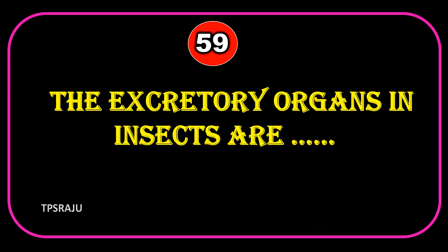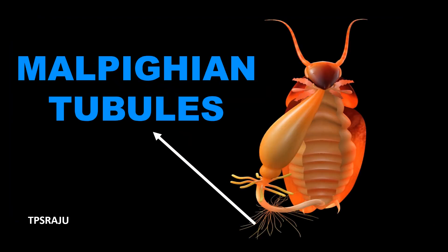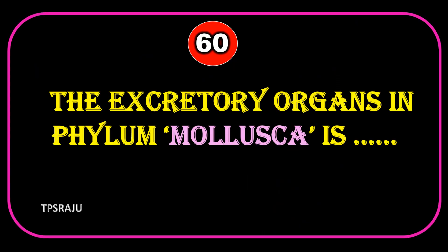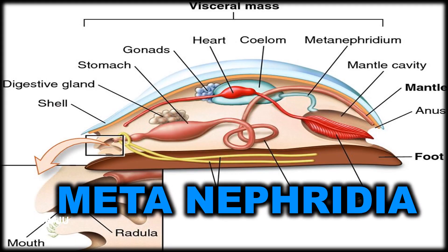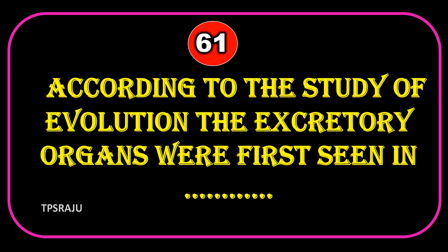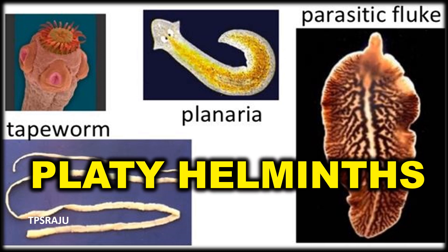The excretory organs in insects are Malpighian tubules. The excretory organs in phylum Mollusca are Meta-nephridia. According to the study of evolution, the excretory organs were first seen in Platyhelminthes.